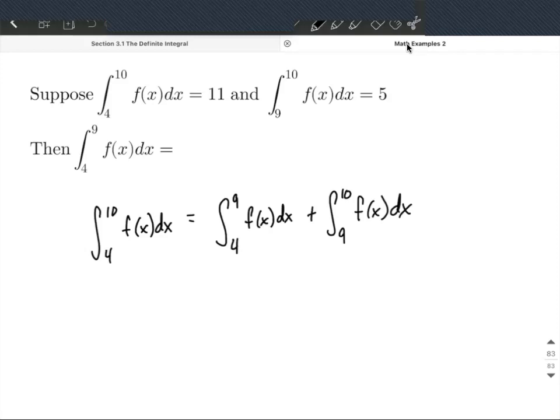We went from 4 to 10 on the left-hand side. Well, 4 to 9 plus 9 to 10 still works out to be all the way from 4 to 10. So if we keep this in mind,